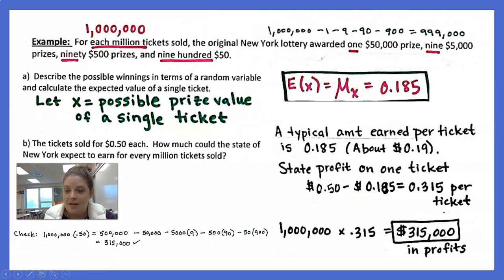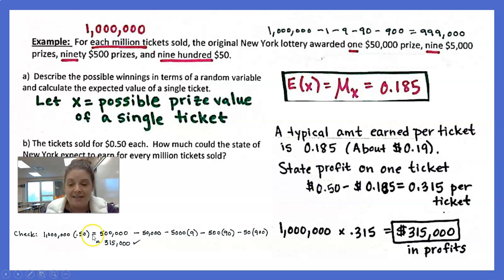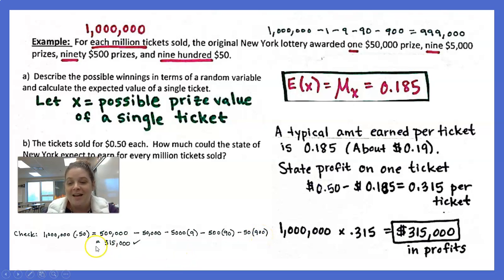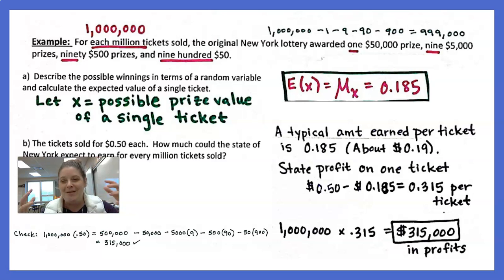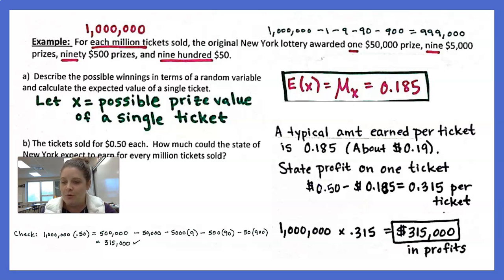For a million tickets, we would expect about $315,000 in profit. You can verify this: one million tickets at 50 cents each gives $500,000, minus the $50,000 prize, minus nine $5,000 prizes ($45,000), minus 90 $500 prizes ($45,000), minus 900 $50 prizes ($45,000), giving the same $315,000. This expected value represents a long-run average — over many lottery tickets, the average amount earned would approach 0.185.